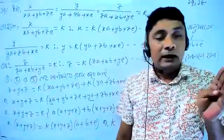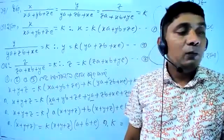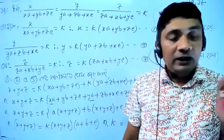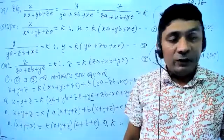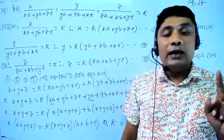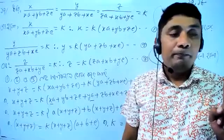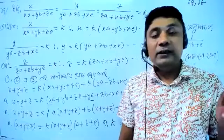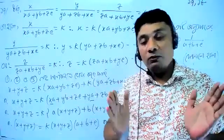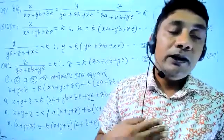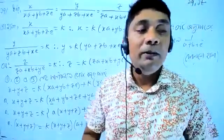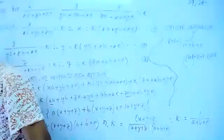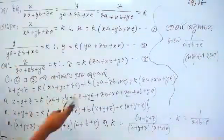This is the left side: 1 by Q plus 1 by R plus 1 by S. So this is the left side of P, Q, R, S. Here is the left side of P, R, S, and R.